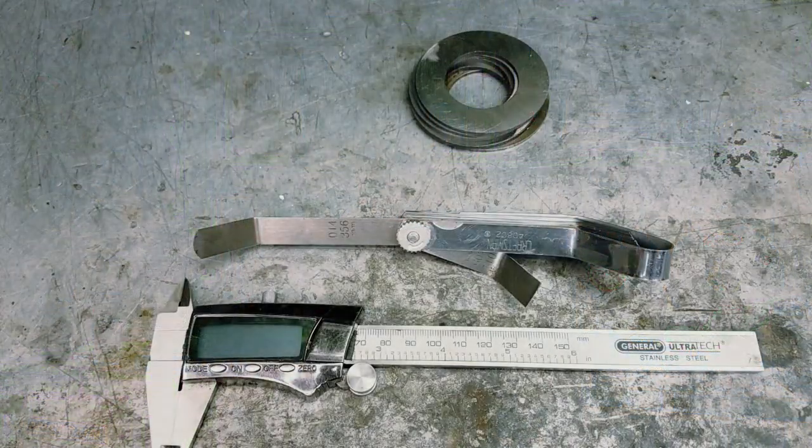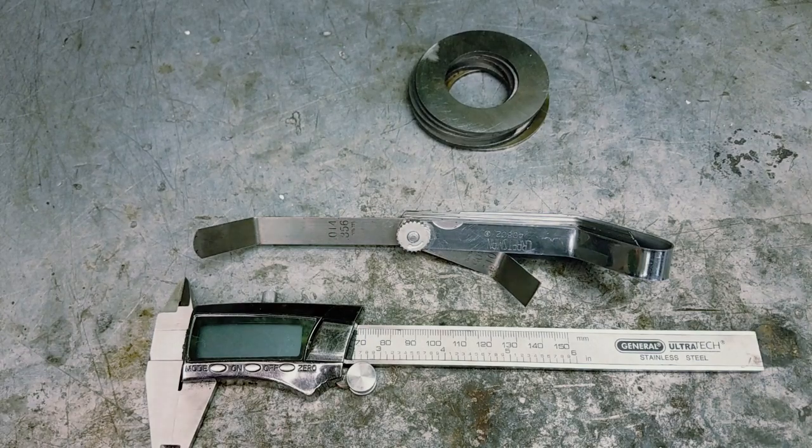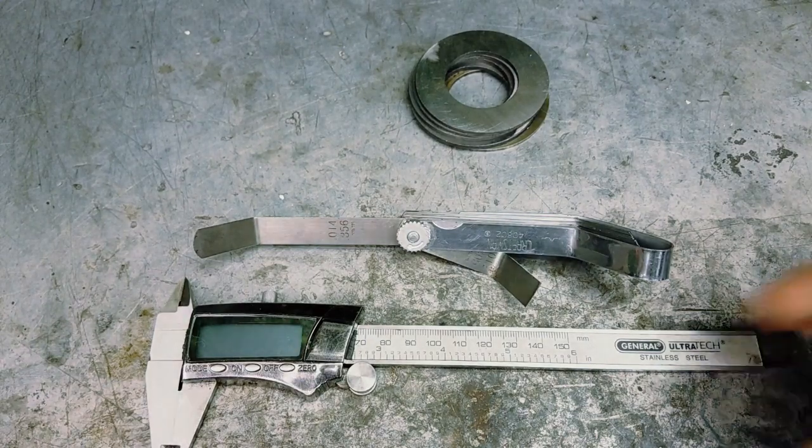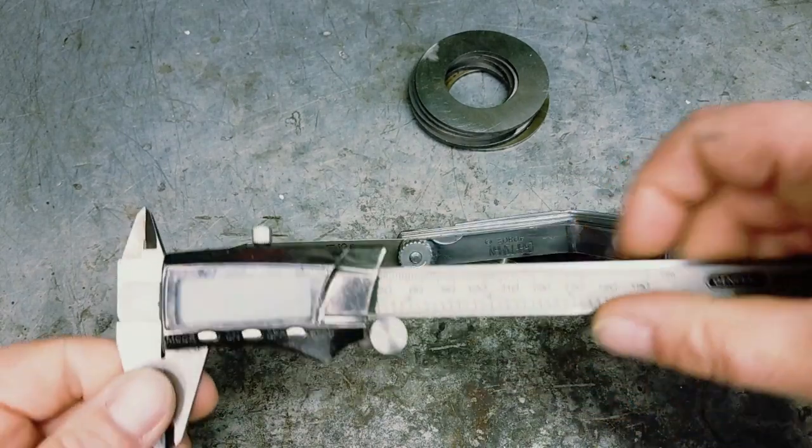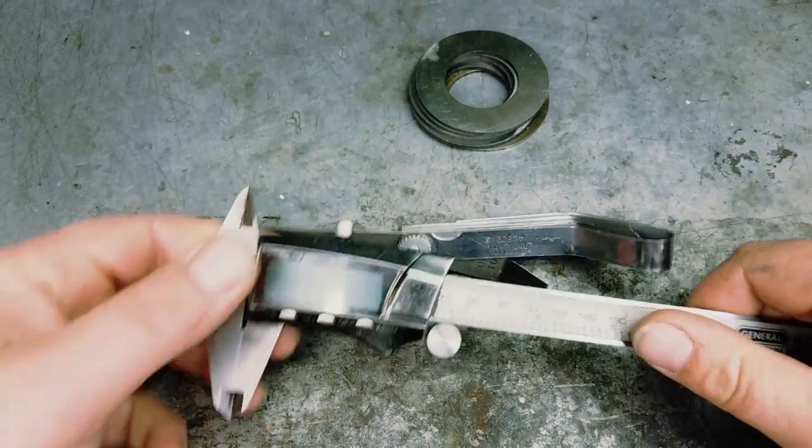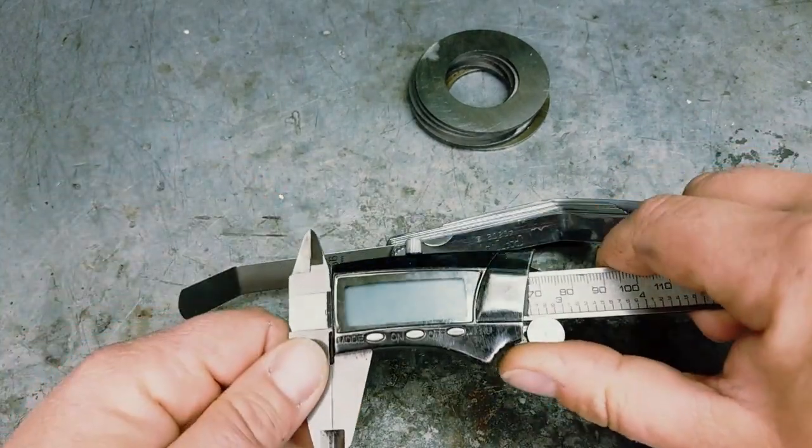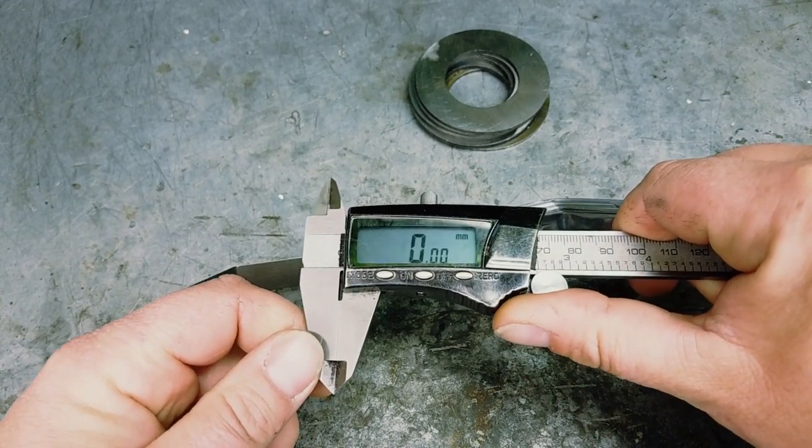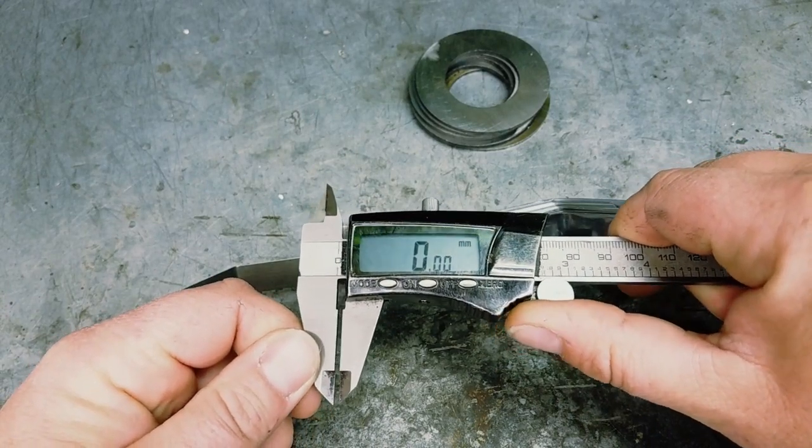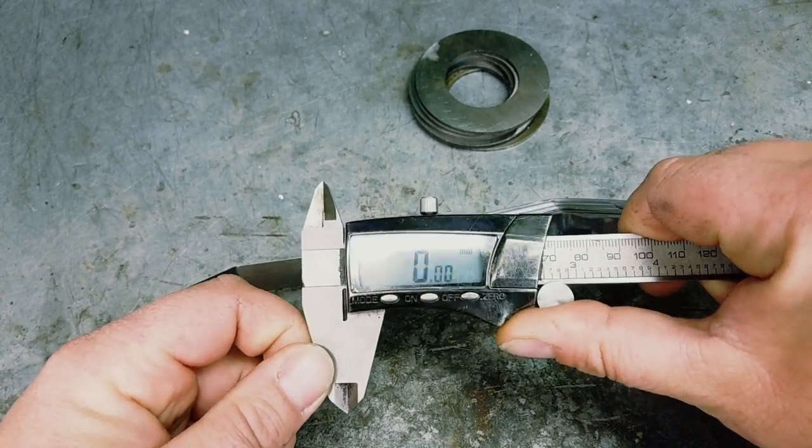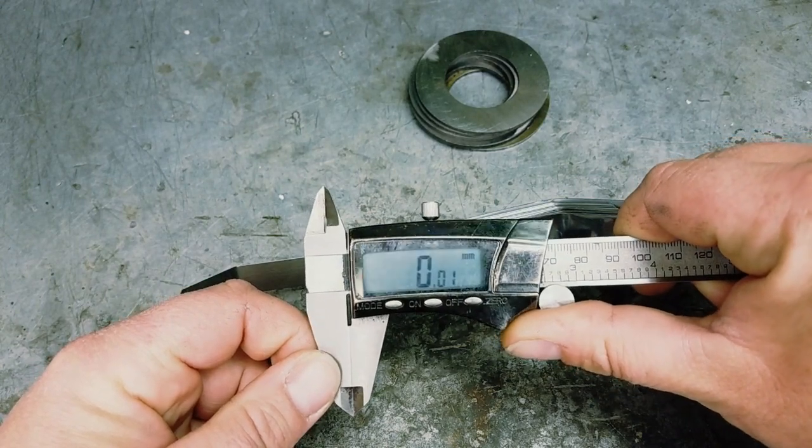The first thing we want to discuss is the tools you're going to need. You're definitely going to need a dial caliper of some sort. I suggest you get a digital one—it makes it easier to read when measuring the width of your shims. This one does millimeters, and you can also toggle to inches if you'd like.